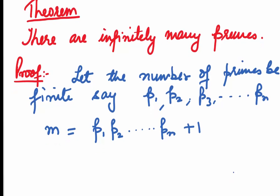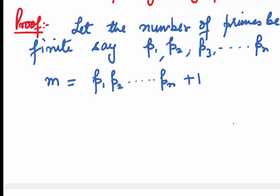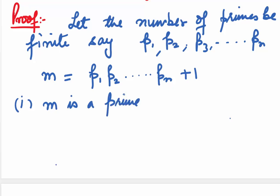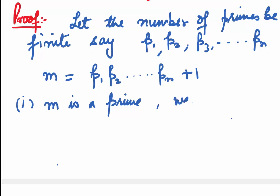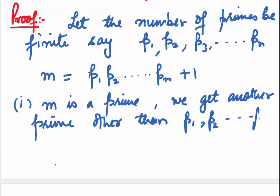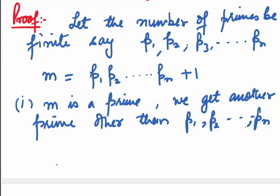Now, there will be two cases. First, that m is a prime. If it is a prime, you know that it is a different number and a different prime. So, we get another prime other than p1, p2, ... pn. Because the product has been added by 1, this new prime has to be different.